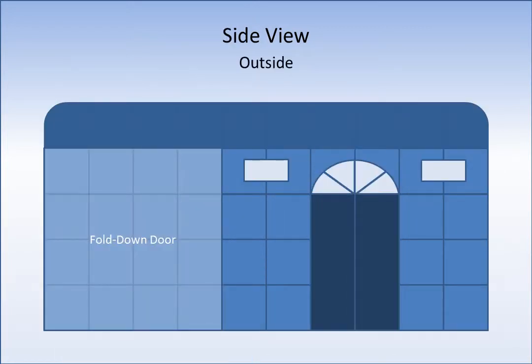This diagram shows the outside of the tiny concert hall. Notice the double doors with a half circle window on top and high windows flanking the entrance. The unit includes a rounded RV style ceiling. And to the left, you can notice the fold down door, which becomes part of the stage.